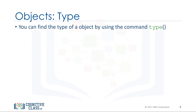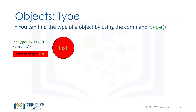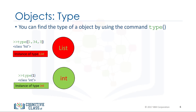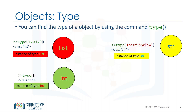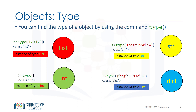We can find out the type of an object by using the type command. In this case we have an object of type list, an object of type integer, an object of type string, and finally an object of type dictionary.